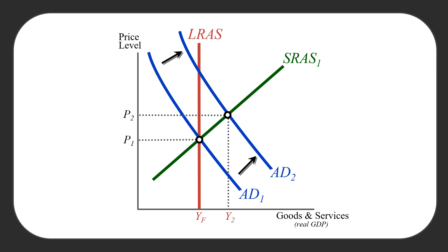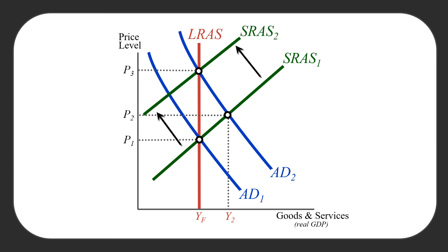We do increase output, at least in the short run, and the price level goes up a little bit. But as the economy expands beyond full employment, what happens next is problematic. We are above our full employment level of output — above the trend line of our business cycle — and the economy is overheating. Resource prices will start to rise. That is the long-run story of our aggregate supply, aggregate demand model. As resource prices rise, that is one of the shifters of our short run aggregate supply curve, so the SRAS curve shifts back to the left. In the long run, we just increase the price level; we only temporarily increase our level of output.